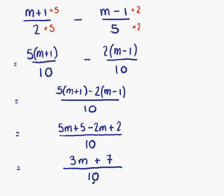What we can sometimes do is try to factorise what we have on the numerator, and possibly that might give us something that can be simplified. But in this case, we can't factorise the top line either. So, 3m plus 7 over 10 is our final answer.